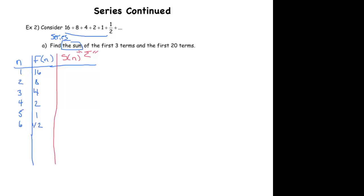So, the sum of the first term, and that's just 16. The sum of the first two would be 24. The sum of the first three would be 28.